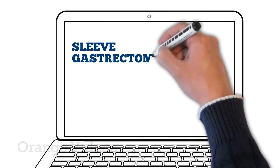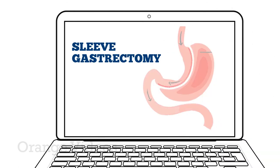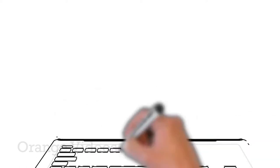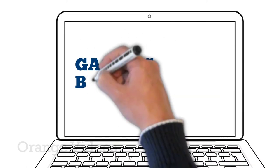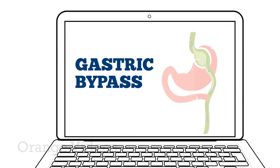A sleeve gastrectomy reduces the size of the stomach, which reduces the amount of food that can be eaten. A gastric bypass reduces the amount that can be eaten and also reduces the calories absorbed by the body.